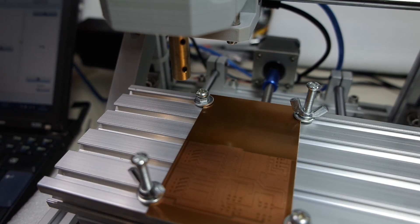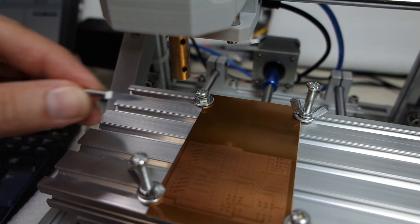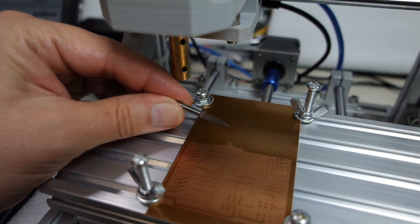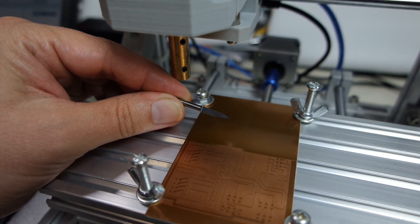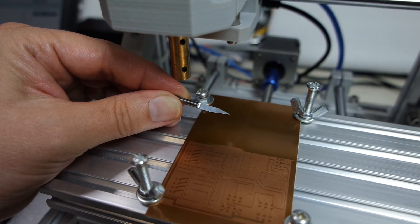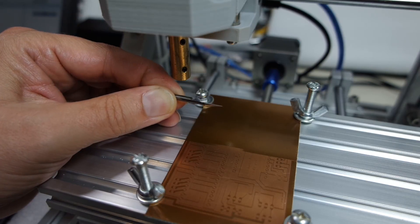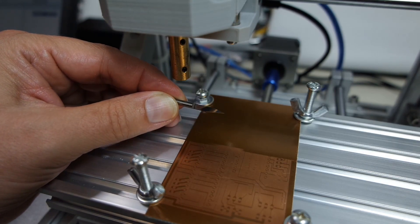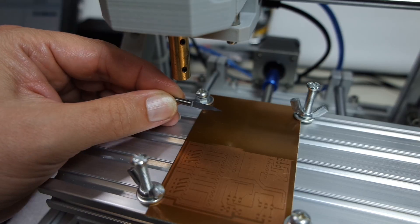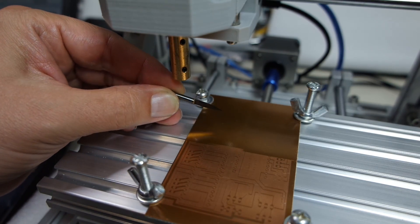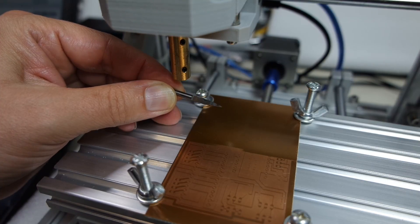I did order some engraver bits. This here is one of them. It's 0.1 millimeters, 20 degrees. It's hardened metal. It should work out fine. It came in a box of ten and I think it cost about seven or eight euros. So it was pretty cheap.